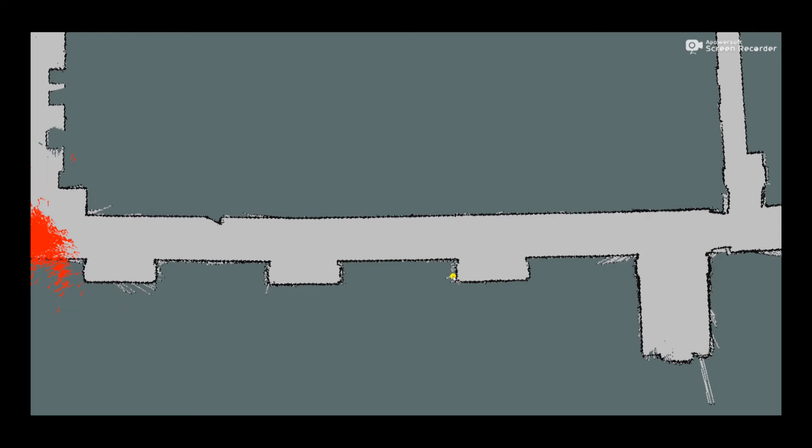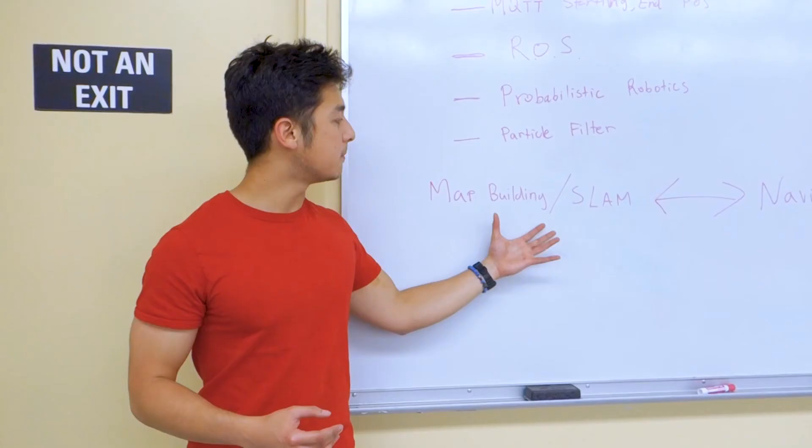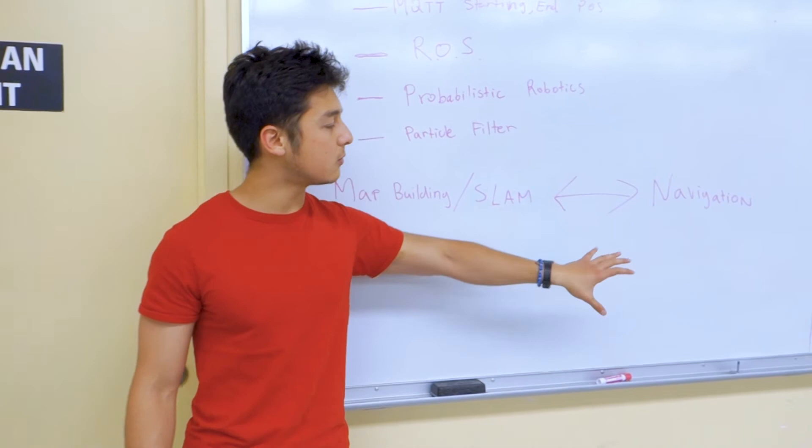There's two main components in our system, which is map building and SLAM, and then we have also navigation. We use the ROS package gmapping for SLAM and map building, and we use the ROS navigation stack.